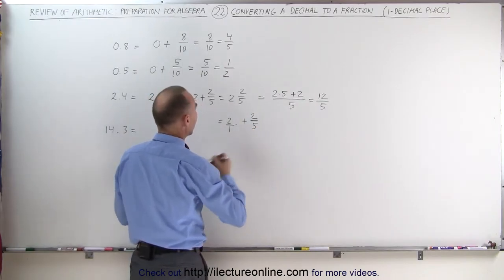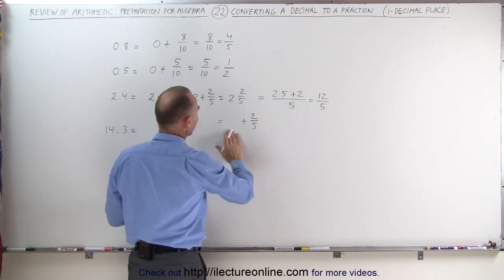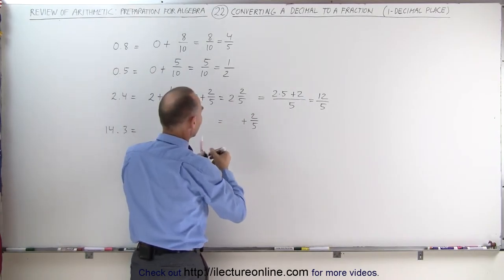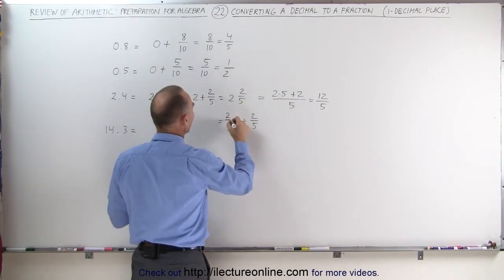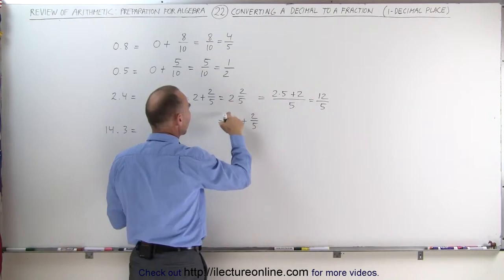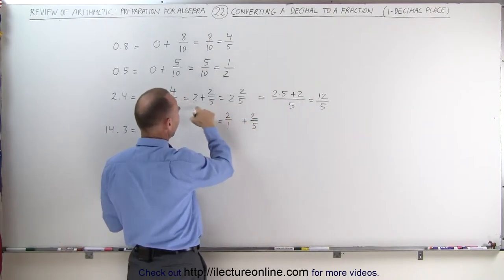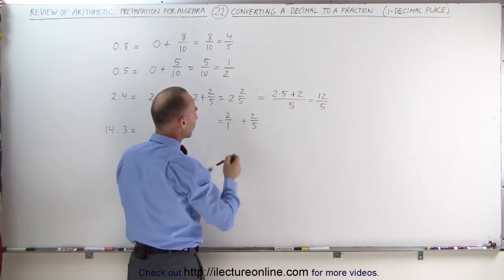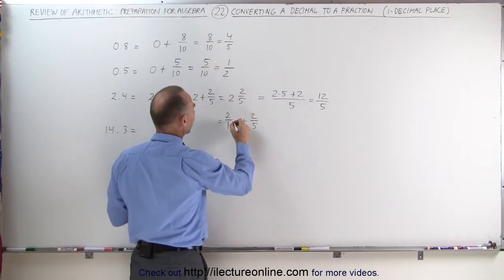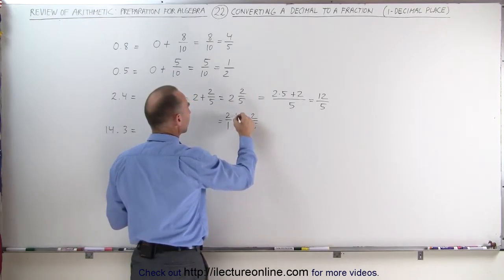So 2 over 1 - instead of writing 2, I can write it as 2 over 1 plus 2 fifths just like we did here. But now we're going to multiply both the numerator and the denominator by the denominator here, which is 5.